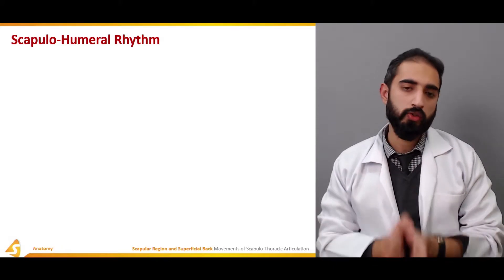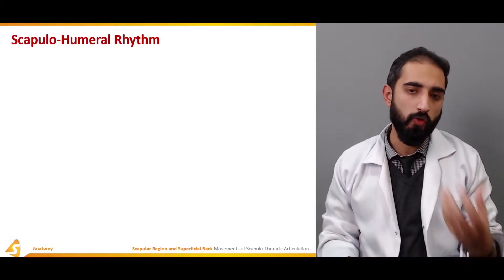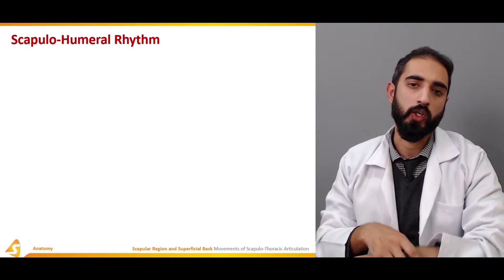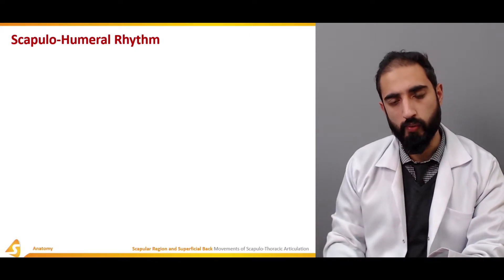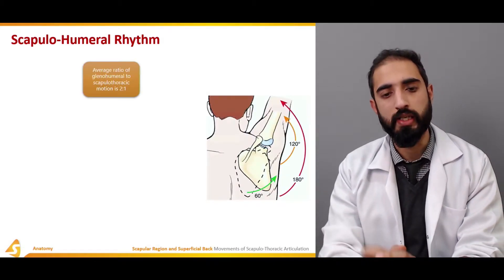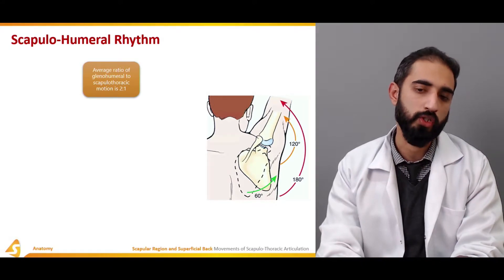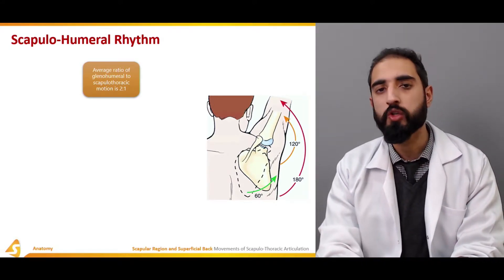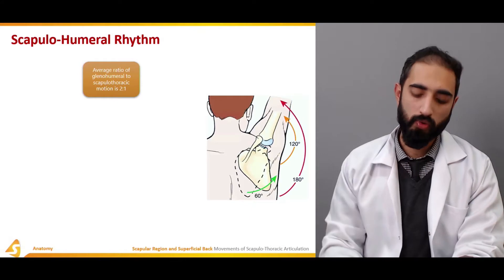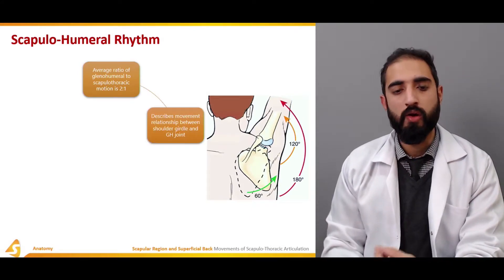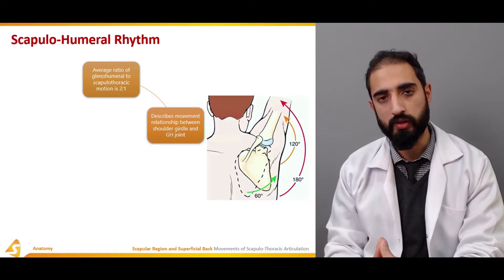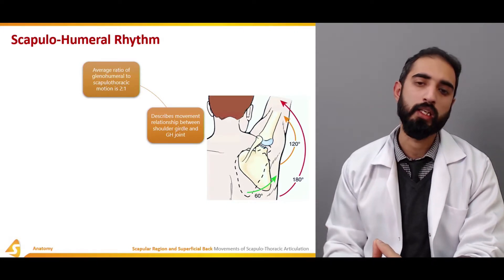As already mentioned, in the shoulder complex we have the glenohumeral joint, and its movements are associated with movements at the scapulothoracic articulation — this forms the basis of scapulohumeral rhythm. Scapulohumeral rhythm is the average ratio of glenohumeral movement to scapulothoracic movement, which is 2:1. For every two degrees of movement at the glenohumeral joint, there is one degree of accompanied movement at the scapulothoracic articulation.